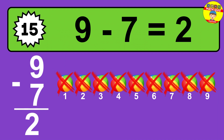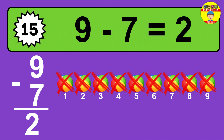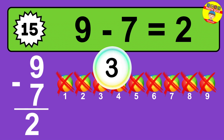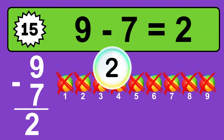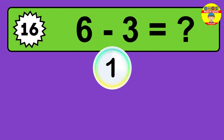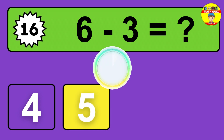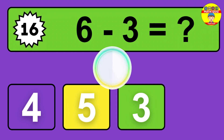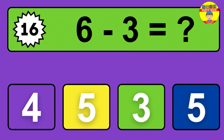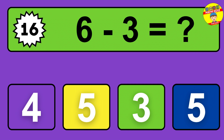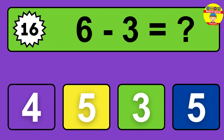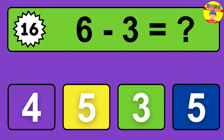Question seventeen: three minus two equals what? The answer is three minus two is one. Let's count it: one.